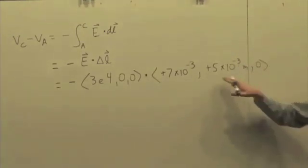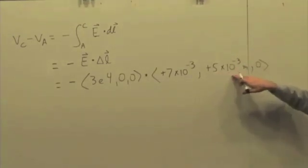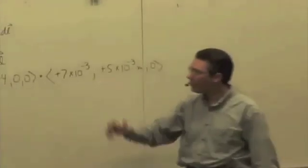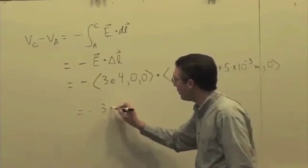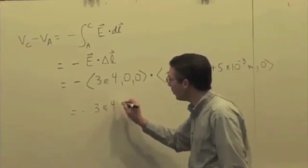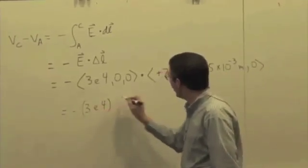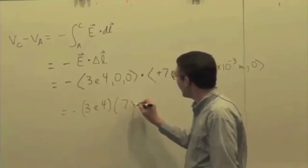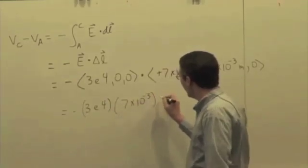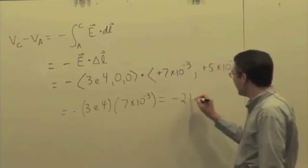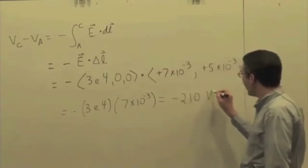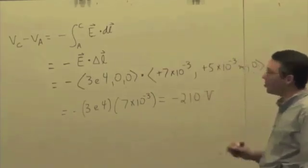And when you take the dot product, does the Y component matter? The Y component doesn't matter — only the X components matter. So we get negative 3 times 10 to the 4th times positive 7 times 10 to the minus 3, and that gives you negative 210 volts.